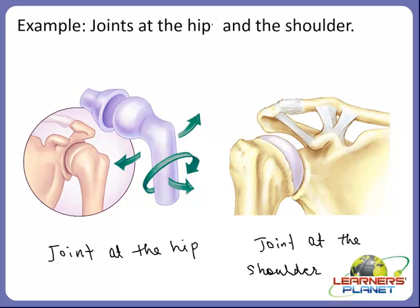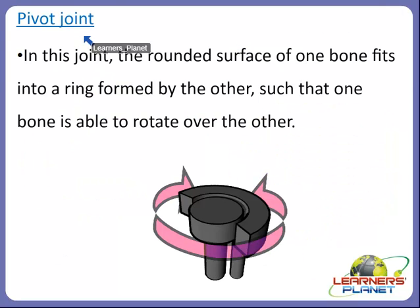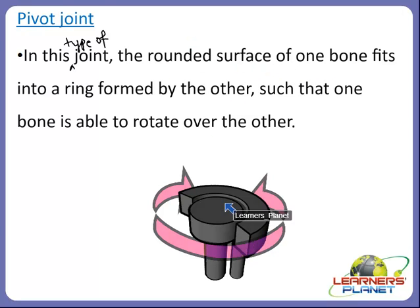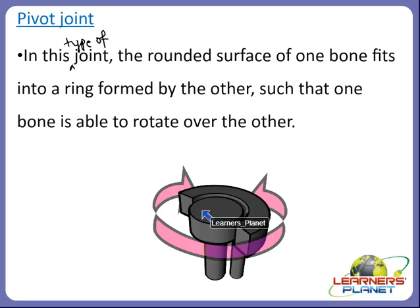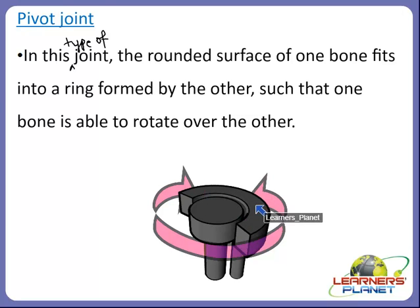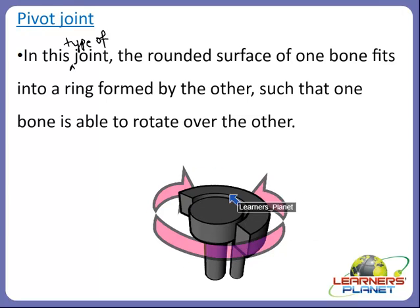Let us move on to the pivot joint. In this type of joint, the rounded surface of one bone fits into a ring formed by the other, such that one bone is able to rotate over the other. This is also a type of freely movable joint.